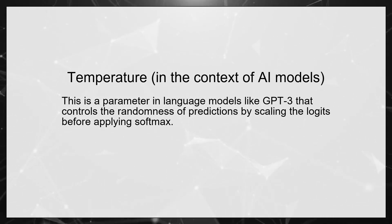Temperature in the context of AI models. This is a parameter in language models like GPT-3 that controls the randomness of predictions by scaling the logits before applying Softmax.